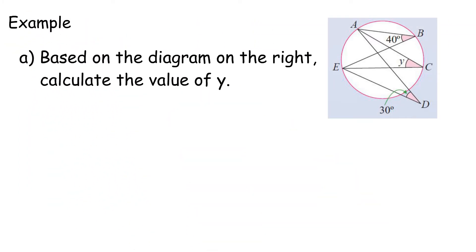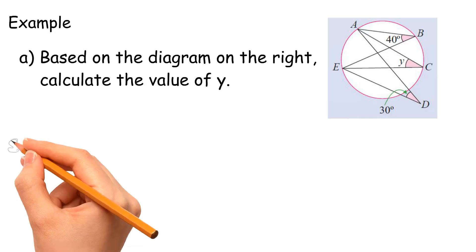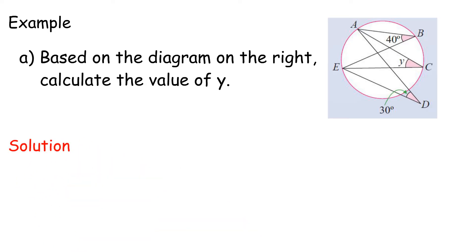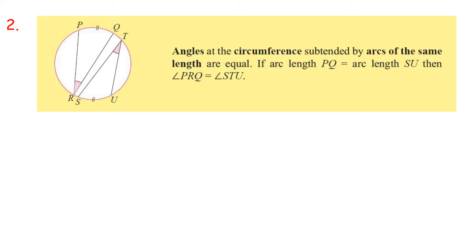Calculate the value of Y. Y equals Angle ABE, equals 40 degrees. Property 2: Angles at the circumference subtended by arcs of the same length are equal.